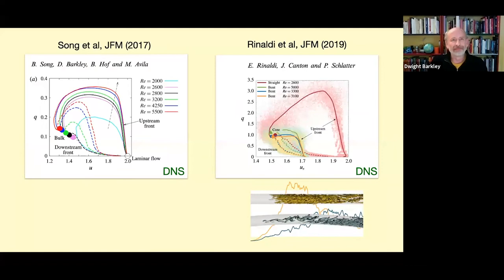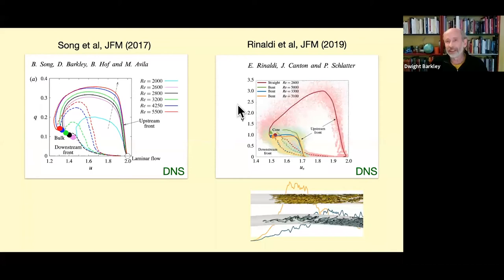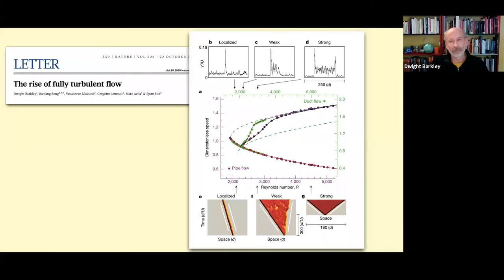Baofeng Song's direct numerical simulations of puffs and slugs measured real quantities — turbulence intensity and centerline velocity — and showed the transition as expected between the excitable case of a puff and the slugs, with different kinds of slugs as already highlighted. Rinaldi et al. recently extended this work considering what happens when you bend a pipe and the effect on the fronts. The key point is that while I'm specifically interested in intermittent flows, these ideas really apply to much higher Reynolds numbers than just the intermittent regime.